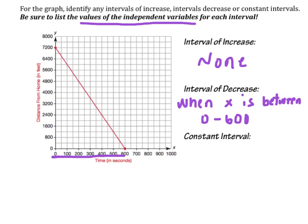Another way of saying that same thing is that we could write a compound inequality. This is decreasing when x is greater than 0 but less than 600.